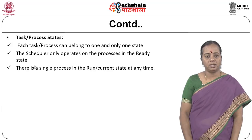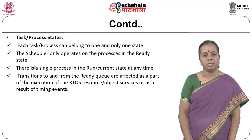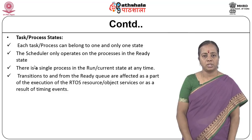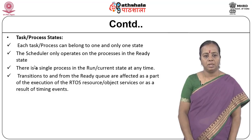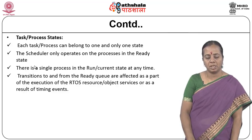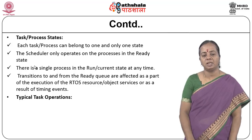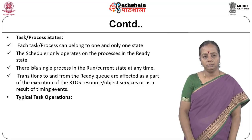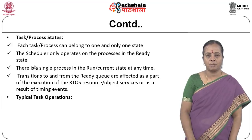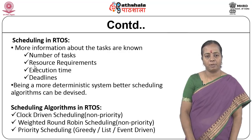Each task or process can belong to only one state at a time, and the scheduler operates only on processes in the ready state. There is only a single process in the running state at any time — one CPU executes only one process at a time. Transitions to and from the ready queue are affected as part of RTOS resource or object services, or as a result of timing events. Typical task operations include creating and deleting tasks, controlling task scheduling, and obtaining task information.